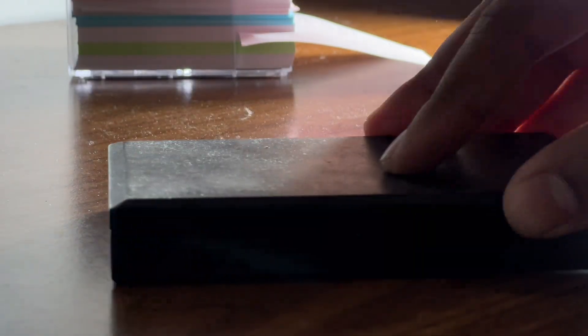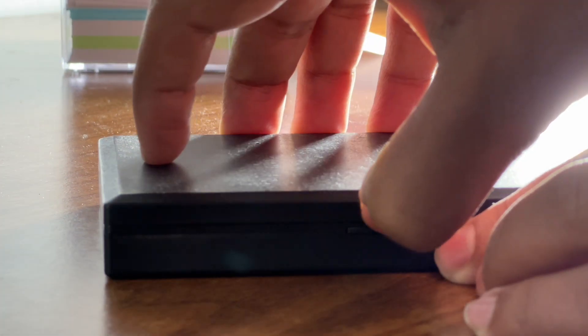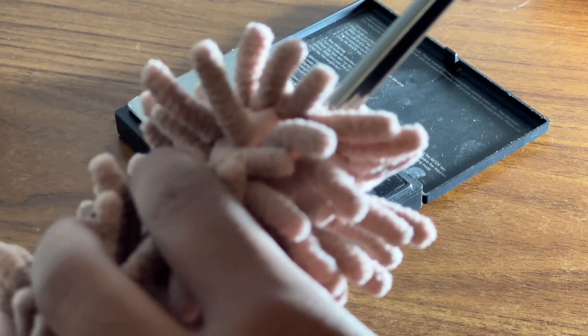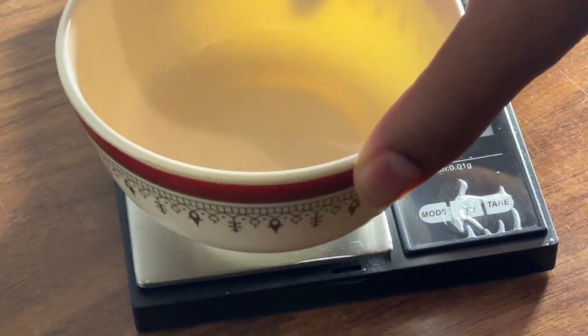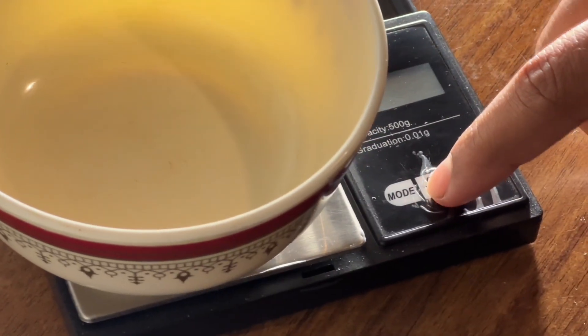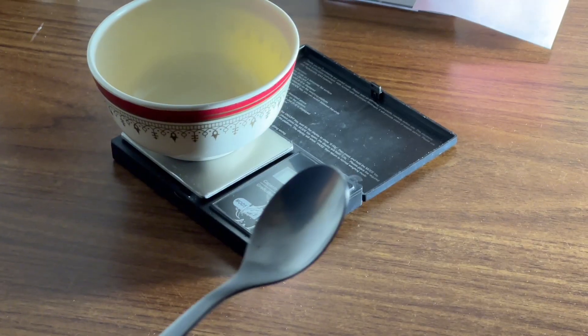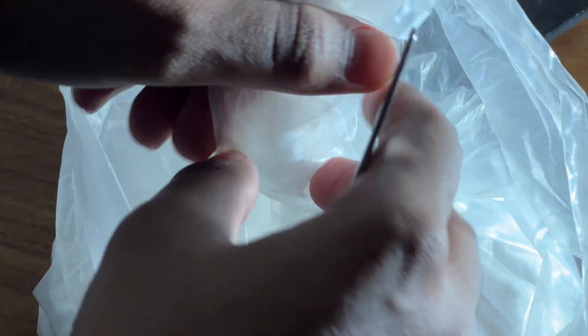I'm gonna use this digital scale to measure every ingredient that I will use in this experiment. But first, I'm gonna clean it. I will use this bowl to measure and mix everything. First, I'm gonna take some potassium nitrate and put it in a bowl.